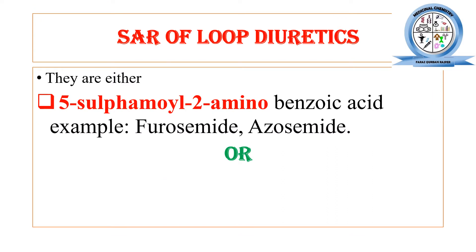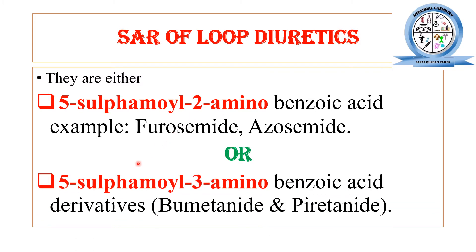As far as loop diuretics are concerned, on the basis of their chemical structure they are classified into two main categories. One class has the 5-sulfamyl-2-aminobenzoic acid derivatives — examples are furosemide and azosemide. The next class is the 5-sulfamyl-3-aminobenzoic acid derivatives, examples being bumetanide and piretanide, which have the 5-sulfamyl-3-aminobenzoic acid substitution in their chemical structure.